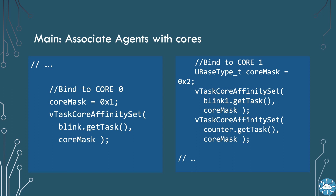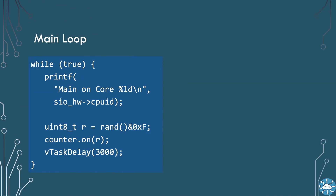Our main task will continue to run on both cores. A loop is going to print out which core it is running on, using a global value defined in SIO.h within the SDK. We should see this changing from core zero to core one and back again over time. It will also generate the random value and send it to the counter.